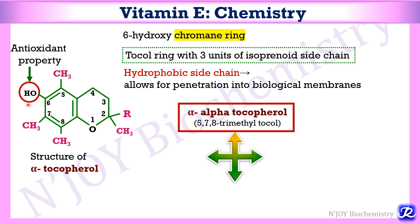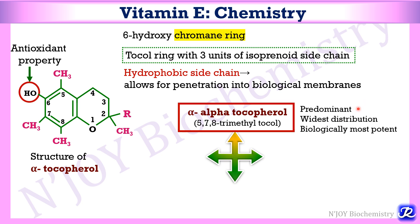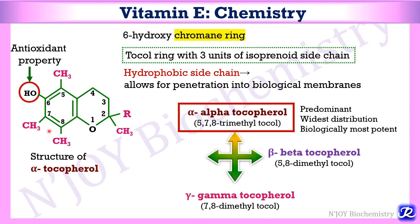Vitamin E has various forms: alpha, beta, gamma, and delta. Alpha-tocopherol is called 5-7-8 trimethyltocol because the methyl group is attached at the 5th, 7th, and 8th positions. Alpha-tocopherol is the predominant form with the widest distribution and is the biologically most potent form. Beta-tocopherol (5-8 dimethyltocol) has two methyl groups at the 5th and 8th positions. Gamma-tocopherol (7-8 dimethyltocol) has methyl groups at the 7th and 8th positions, and delta-tocopherol has only one methyl group at the 8th position. All tocopherols differ only in the position and number of methyl groups attached to the chromane ring.